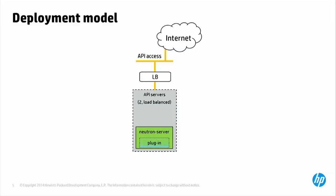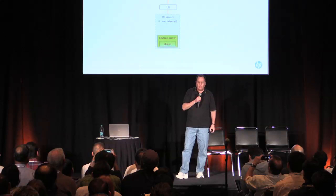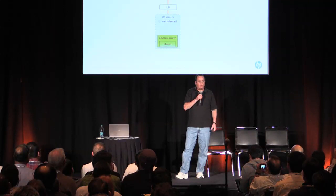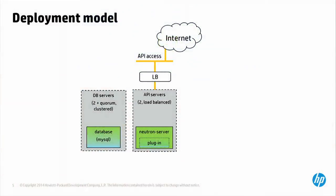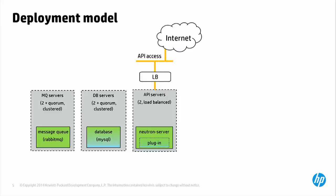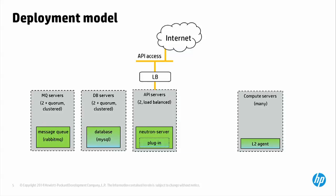The heart of the deployment is the Neutron server. In our deployment, we use a pair of those server building blocks behind a load balancer, with a dedicated API access network for our tenants to come in on to the Neutron endpoint. We take another pair of servers plus a quorum node clustered to run our database — we run MySQL. Another pair of servers for RabbitMQ, again with a quorum node clustered for high availability. There was a talk on Tuesday by colleagues going into detail on how we run our HA clusters. And then there are many, many compute servers.